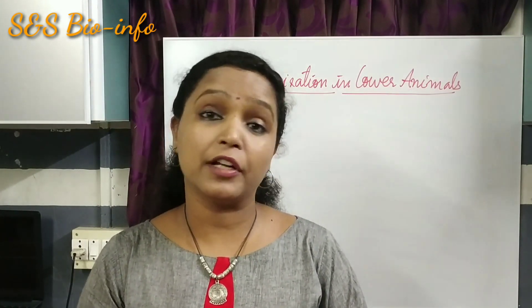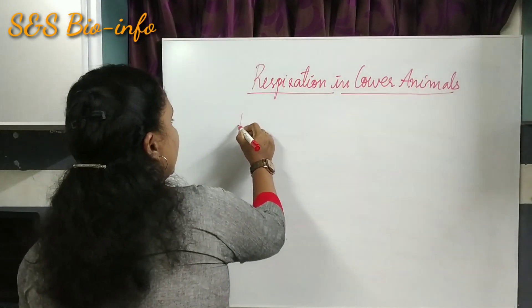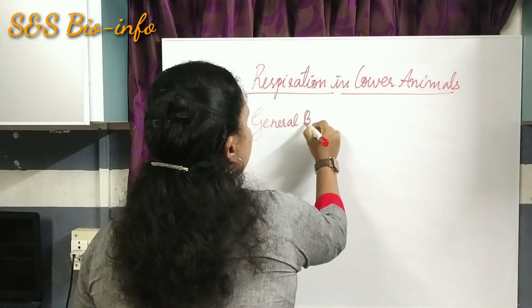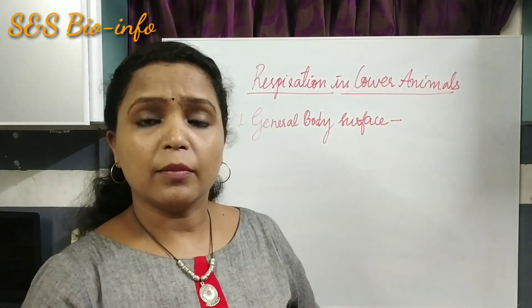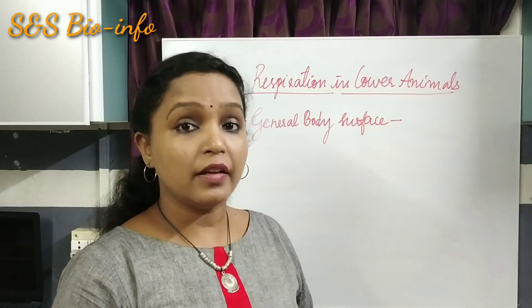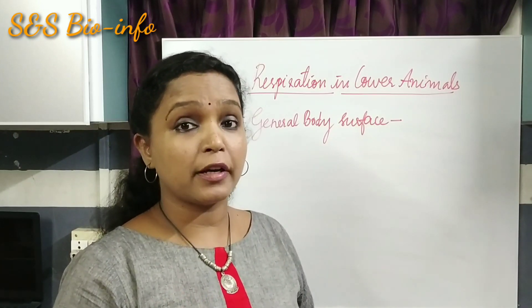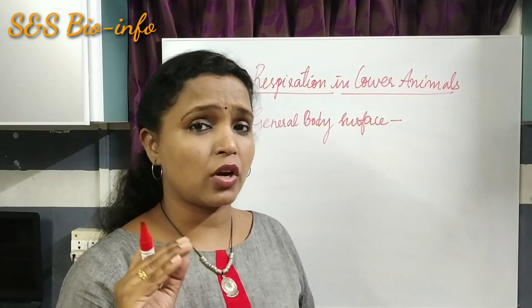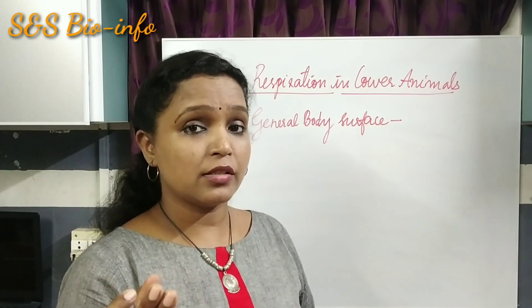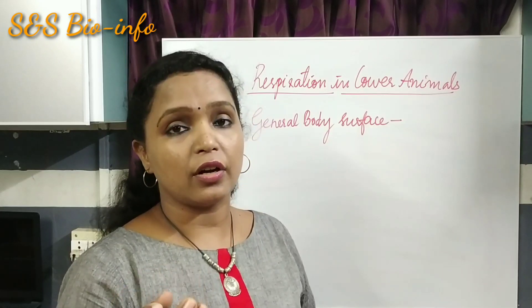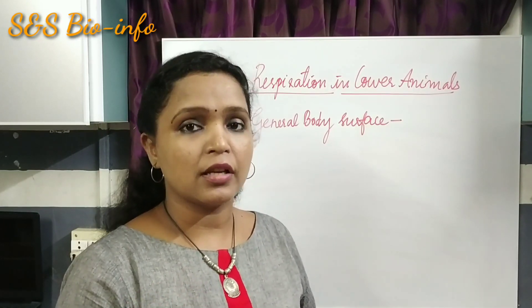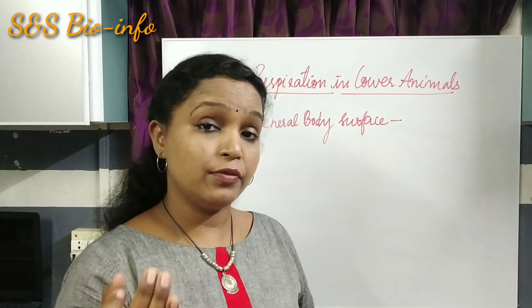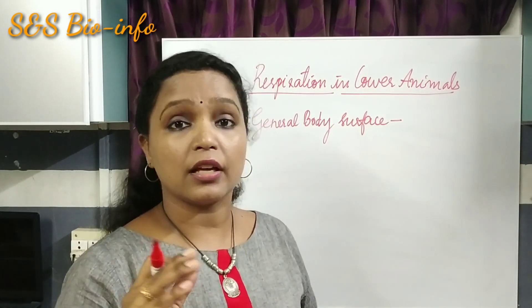Now let's familiarize the respiratory organs of lower group of animals. Number one: general body surface. Some lower group of animals like porifera, coelenterata, and flatworms respire through the body surface by a process called simple diffusion — the movement of particles from a region of higher concentration to a region of lower concentration. In such animals, gaseous exchange takes place by simple diffusion: oxygen is diffused into the body and carbon dioxide is released out.